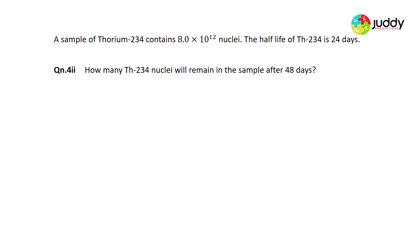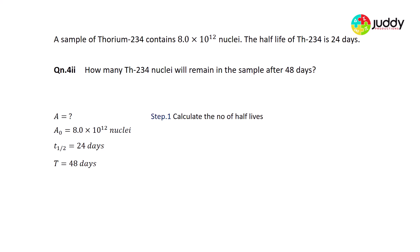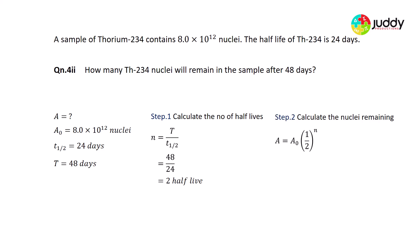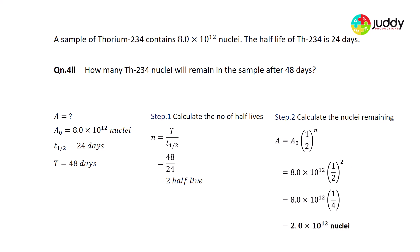Question 4.2: how many Thorium-234 nuclei remain after 48 days? The initial amount is 8.0 × 10^12 nuclei; the half-life is 24 days. Number of half-lives = 48 ÷ 24 = 2. Nuclei remaining = 8.0 × 10^12 × (½)^2 = 8.0 × 10^12 × (1/4) = 2.0 × 10^12 nuclei.